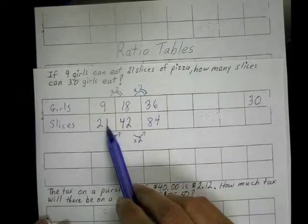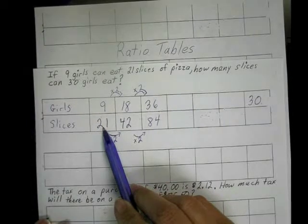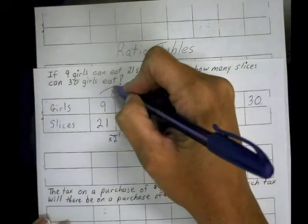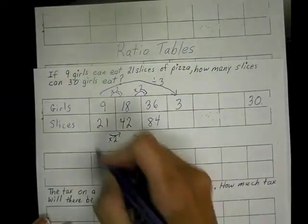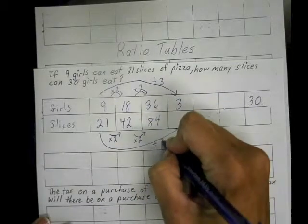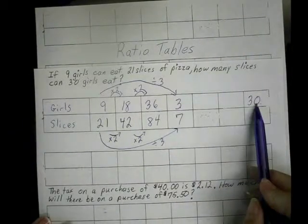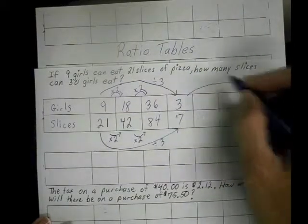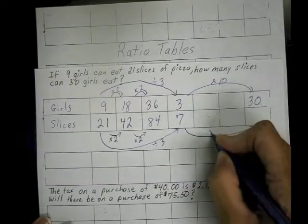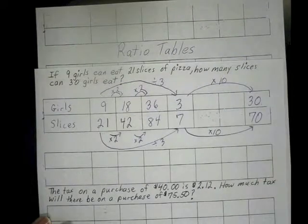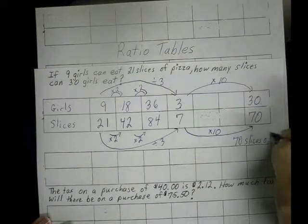So I'm going to go back to my 9 and 21 first and think about a common factor for 9 and 21. I can divide by 3, so let me try using division. I'm going to divide 9 by 3, giving me a quotient of 3, and divide 21 by 3, and now I have a 7. From this point, I can see 3 times 10 will give me 30 — that will allow me to solve the problem. So if I multiply by 10 with my 3, I do the same thing to the 7. That would tell me that for 30 girls, I would need to buy 70 slices of pizza.